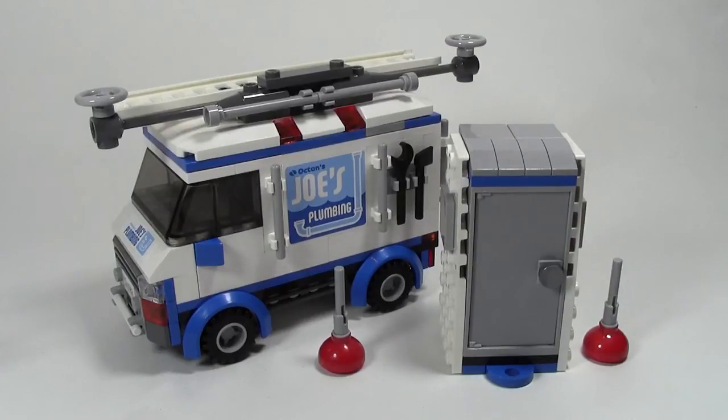Thanks a lot for watching this review of set number 70811, the flying flusher. This set has three minifigures, one vehicle, one port-a-potty, one Micro Manager, and 351 pieces.